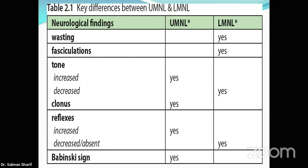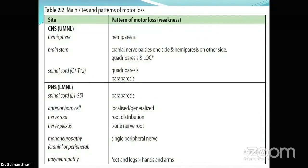Examination starts with inspection. Atrophy, wasting, or fasciculations on inspection point toward a lower motor neuron lesion. On the other hand, increased tone, exaggerated reflexes, clonus, Hoffmann's sign, or an upgoing plantar all point toward an upper motor neuron lesion.